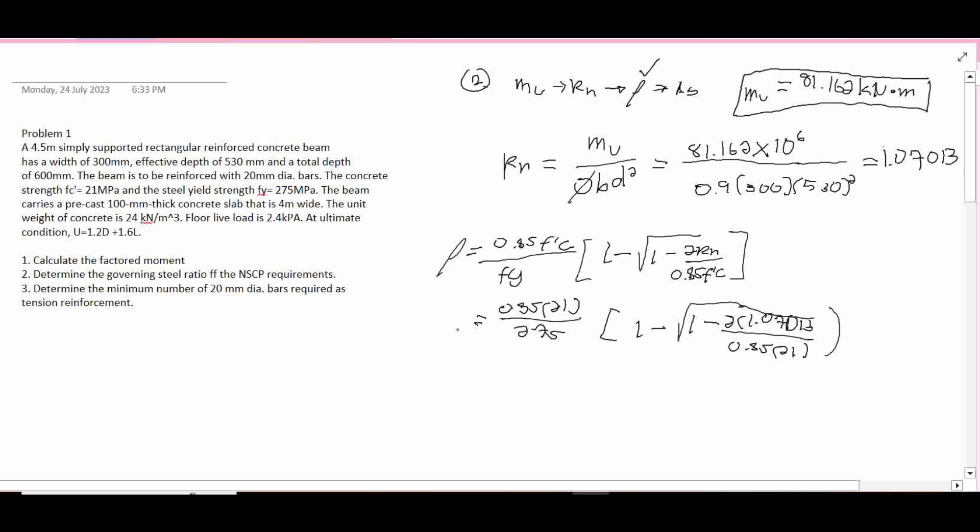Our RO will be 0.0040156. So this is our RO. Let's compare it to RO minimum. Our RO minimum is 1.4 over FY, which is 0.005091. Since our RO is less than the RO min, so RO min governs. Use RO min.